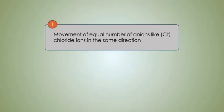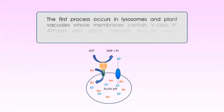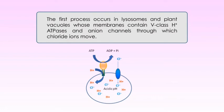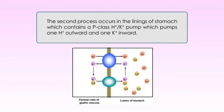In order for an organelle lumen or extracellular space like the lumen of the stomach to become acidic, movement of protons must be accompanied either by: one, movement of an equal number of anions like chloride ions in the same direction, or two, movement of an equal number of a different cation in the opposite direction. The first process occurs in lysosomes and plant vacuoles, whose membranes contain V-class hydrogen ion ATPases and anion channels through which chloride ions move. The second process occurs in the linings of the stomach, which contains a P-class hydrogen-potassium pump, which pumps one hydrogen ion outward and one potassium ion inward.